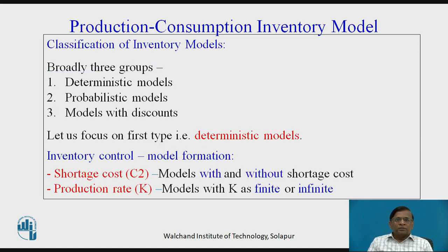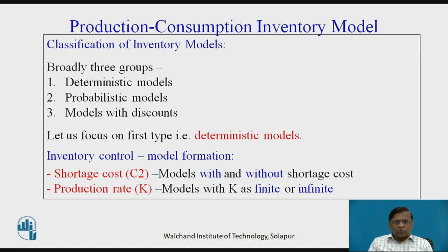Let us revise briefly about the types of models in inventory control. Very broadly, there are three types or three groups of inventory models: deterministic models, probabilistic models, and models with discounts.